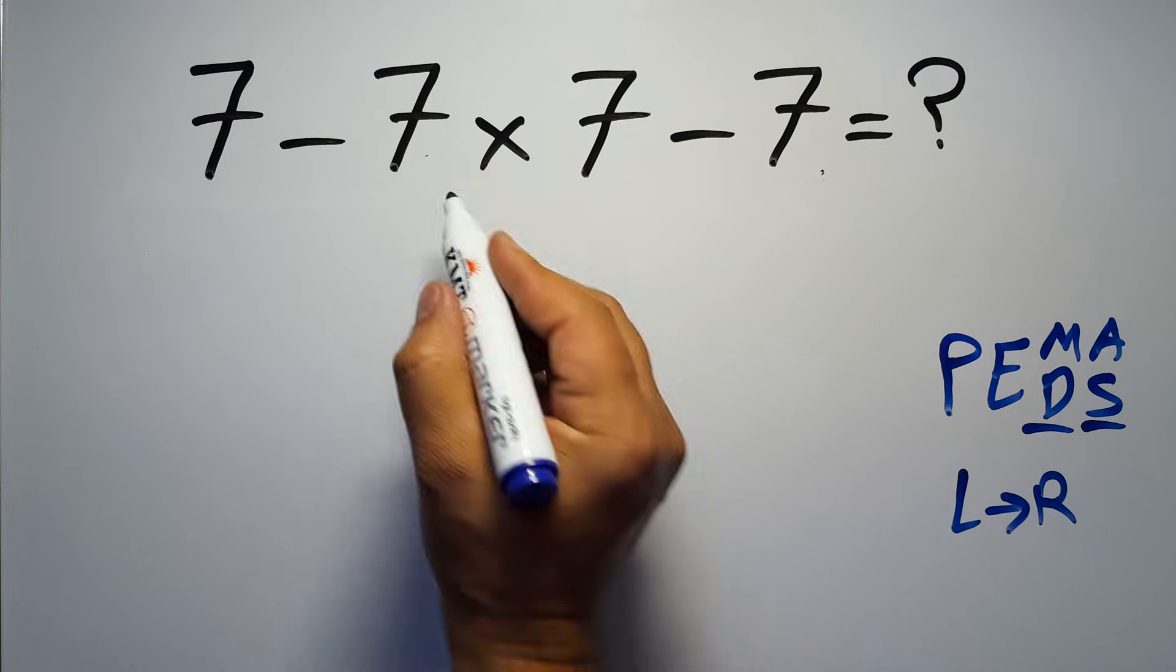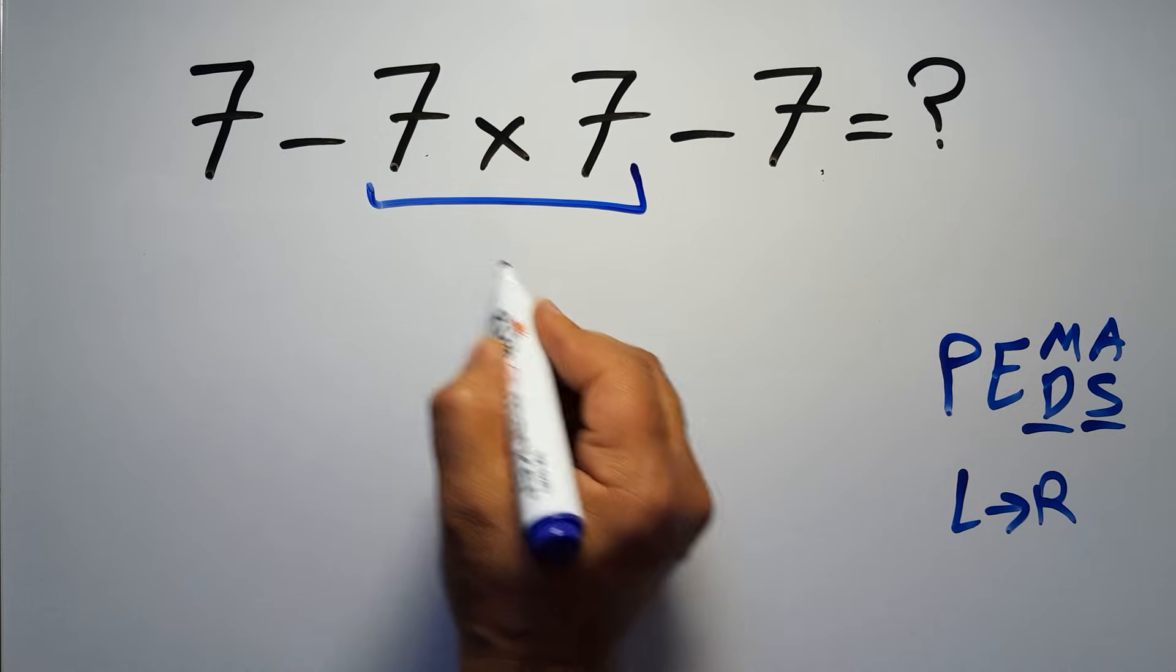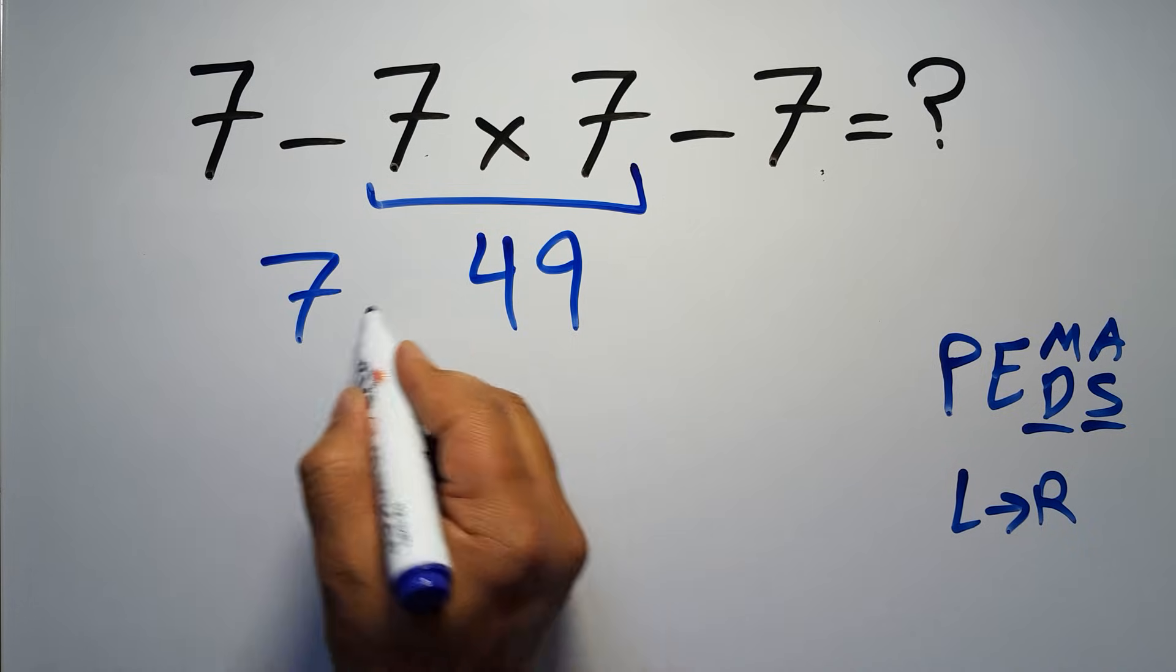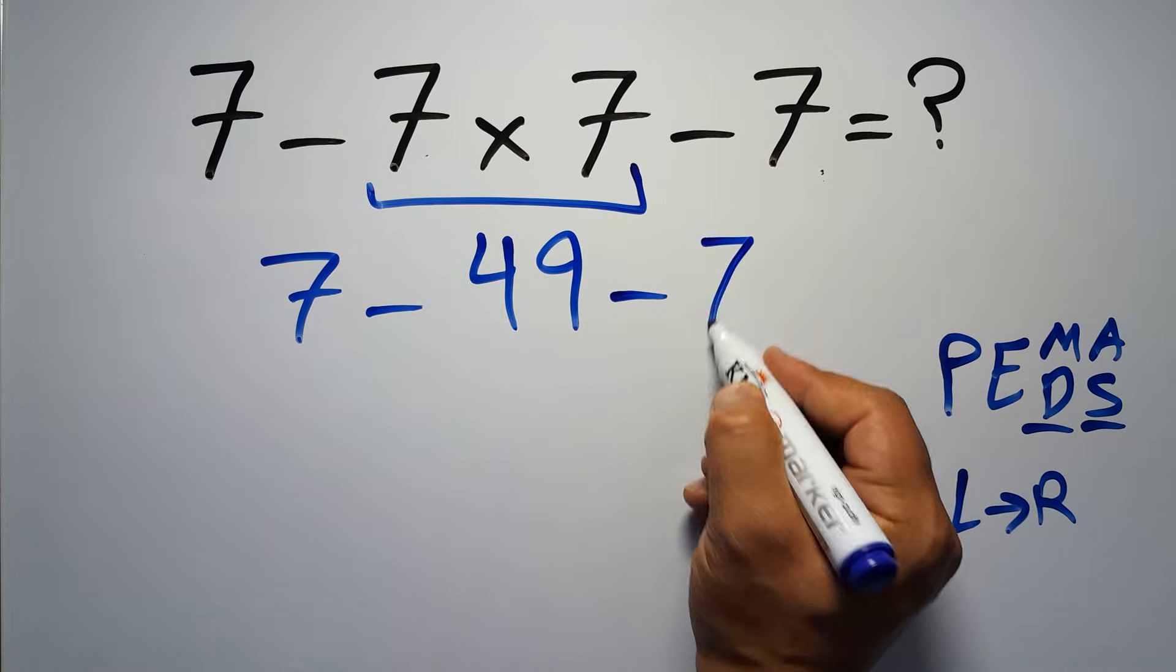So first, this multiplication: 7 times 7 gives us 49. So we have 7 minus 49, and then minus 7.